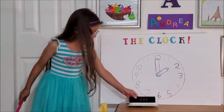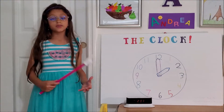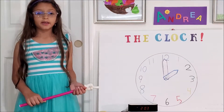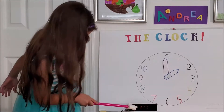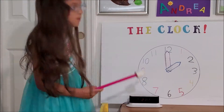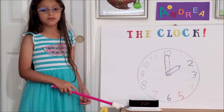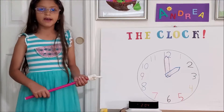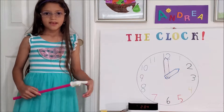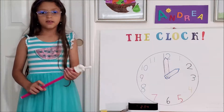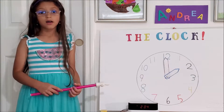Next, we have the digital clock. The digital clock shows what time it is in numbers. For example, if it was 2:03, it would show it in numbers on the digital clock without any hands like the analog clock. And that is why the analog clock and the digital clock are different.